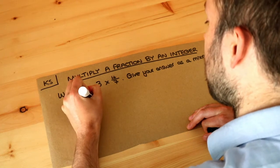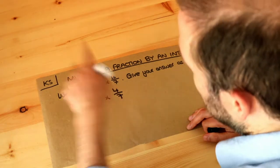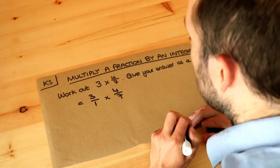So we could write this as 3 over 1 times 4 over 7. And the reason that works is because 3 divided by 1 is just 3. Dividing anything by 1 doesn't change it.